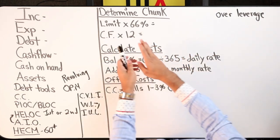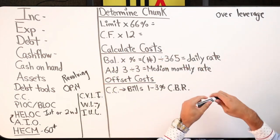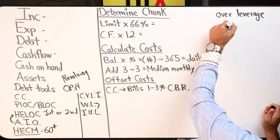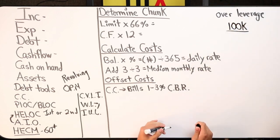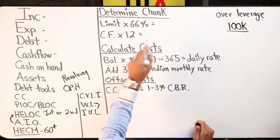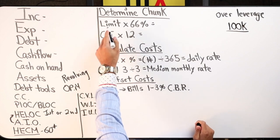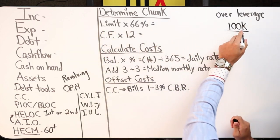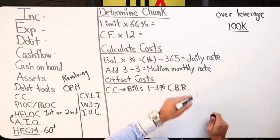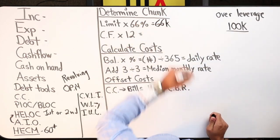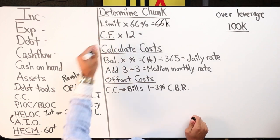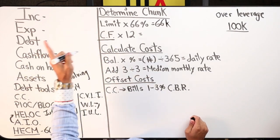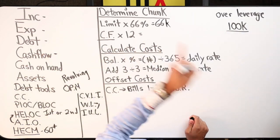How do we determine the chunk? I have two sub rules to help me come up with that. These rules are standard. You can't go wrong. It really helps you from over leverage. If I have a $100,000 line of credit, rule number one is you take the limit of the credit line, you times it by 66%. That's 66,000.